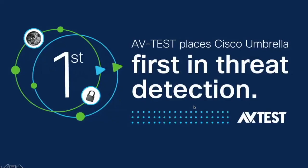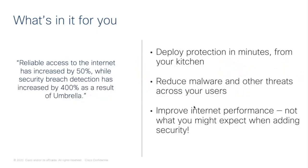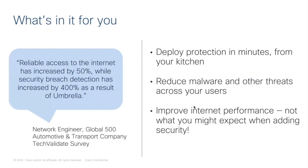As a proof point, AV-TEST recently did a research study comparing Cisco Umbrella to other vendors in the market, and we placed first in threat detection. You can check out the full report on our website. Additionally, Umbrella often improves internet performance — which is not something you typically expect from a security product. That's because we have more than 32 data centers worldwide located at the largest ISPs and CDNs, with more than 900 partnerships and 9,000 peering sessions, helping us route requests the fastest way possible. And because we enforce security at the DNS layer, it does so without adding additional latency.